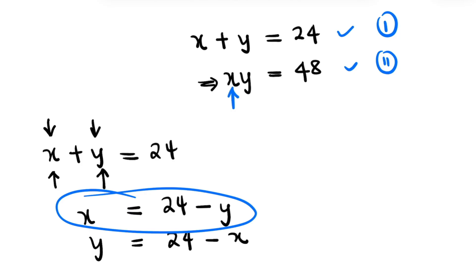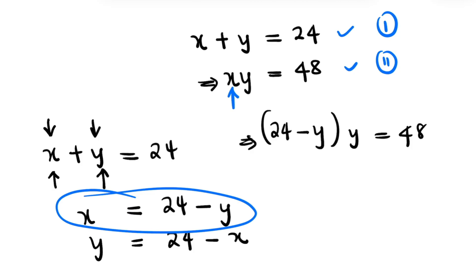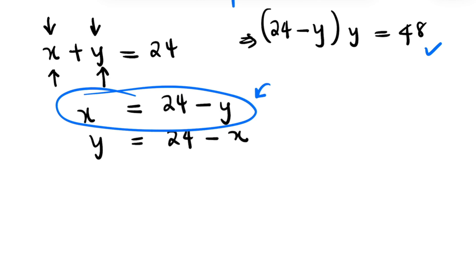When we substitute x equals 24 minus y into equation 2, we now have (24 minus y) times y equals 48. This is what we will solve for y. Expanding the bracket: 24 minus y times y gives 24y minus y squared, equal to 48.